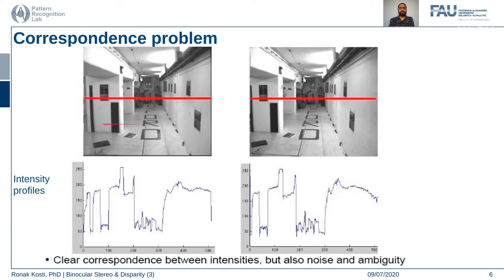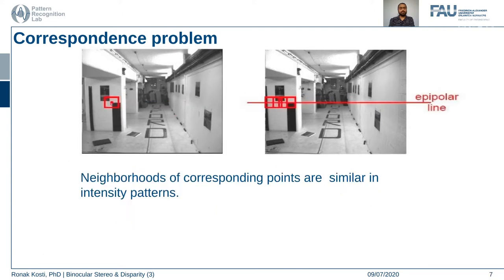Let's say we have these two stereo image pairs with their scan lines left and right. We fix a feature point along the scan line — one that looks quite distinct with two corners, making it a very distinctive feature point on the left image. We try to find or match this window on the right-hand side, using the similarity constraint along the epipolar line. The neighborhood of corresponding points will be similar in intensity patterns.